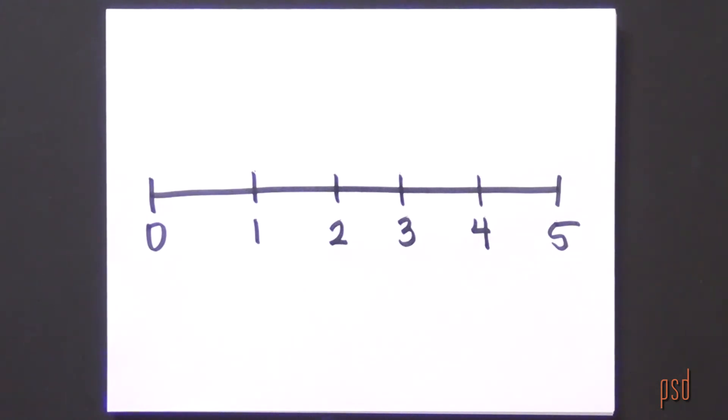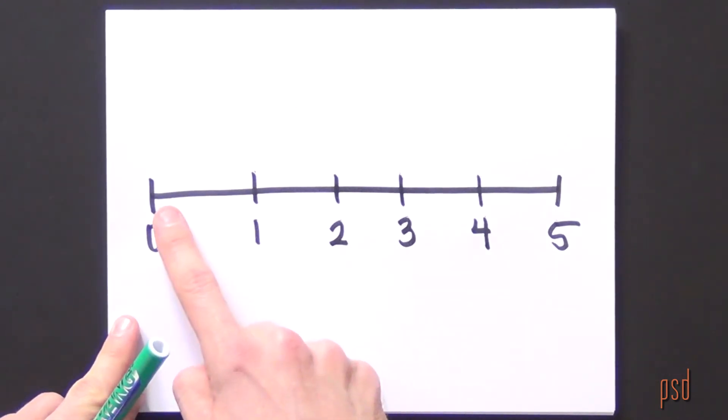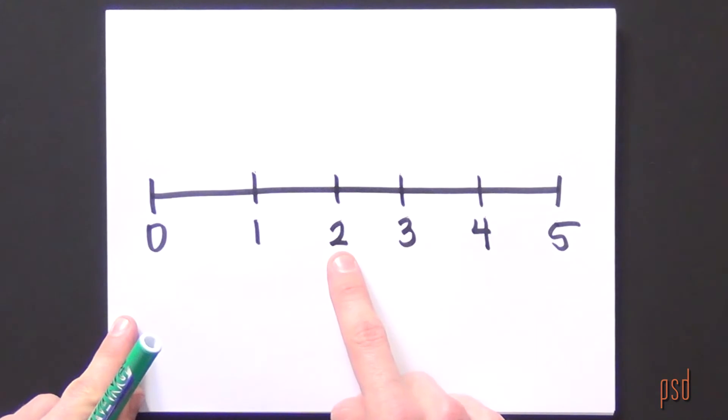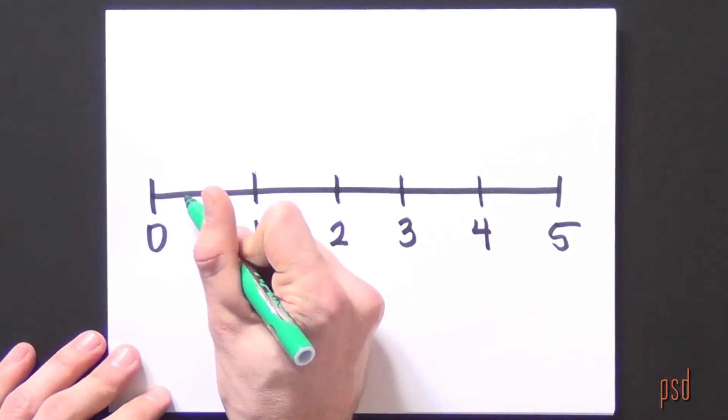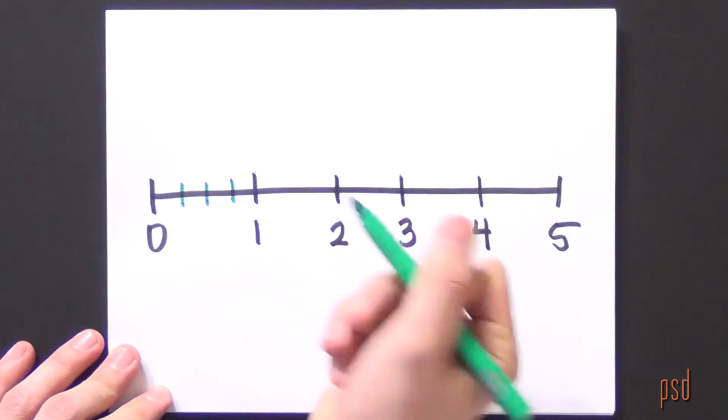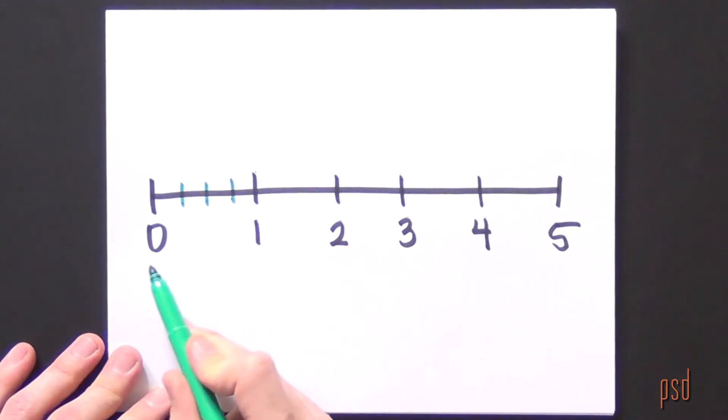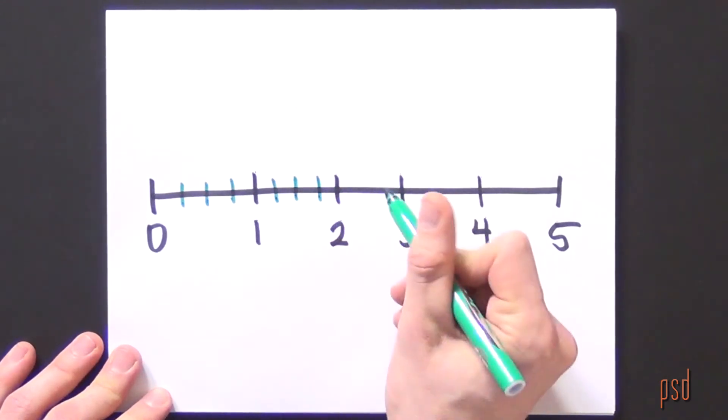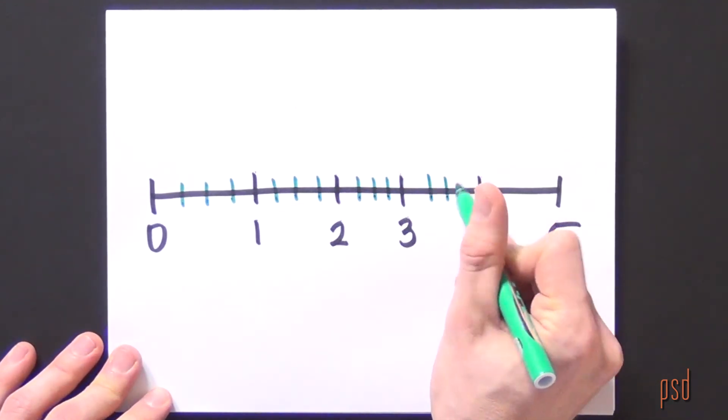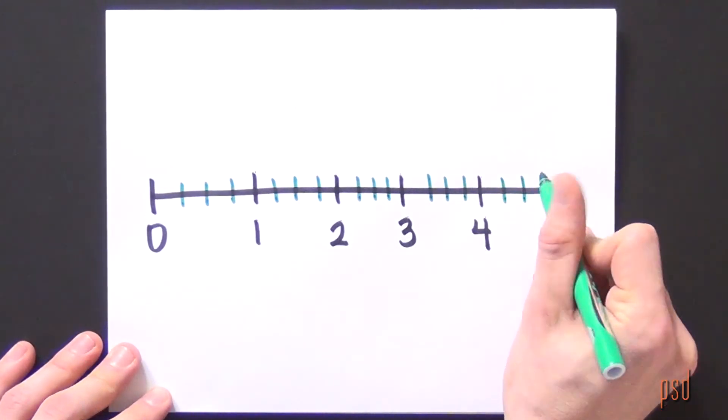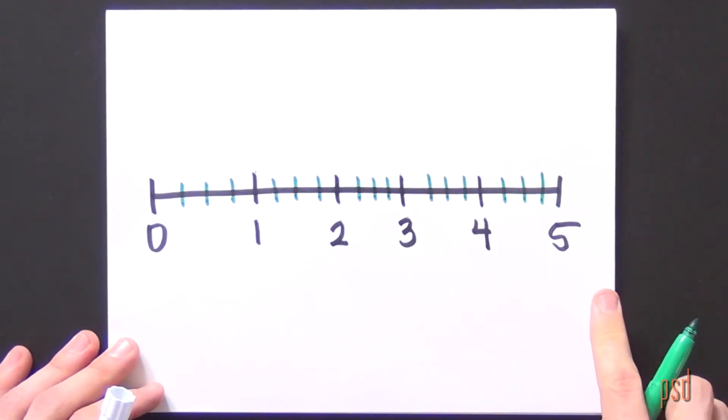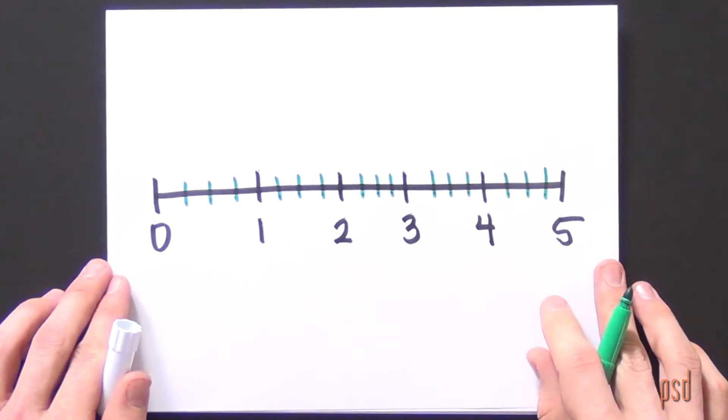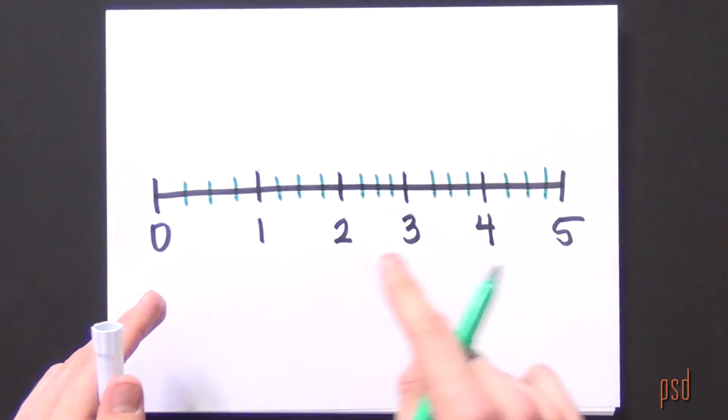As your students explore this idea, they will probably offer an idea or a solution along the lines of maybe we should break each number into fourths. So encourage them to do this. If I make three tick marks in between each interval count of one, I can see fourths. I still have five feet of string and now I have it partitioned into fourths.